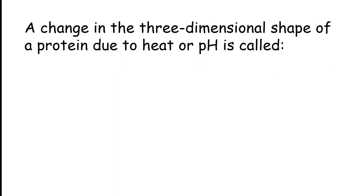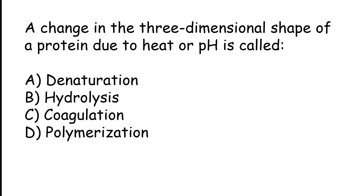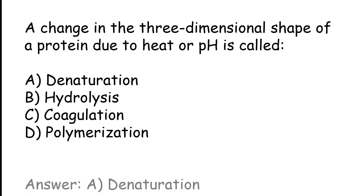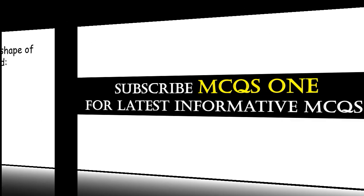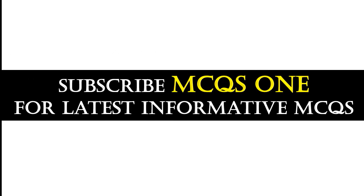A change in the three-dimensional shape of a protein due to heat or pH change is called: denaturation, hydrolysis, coagulation, polymerization. The correct answer is option A: denaturation. Thanks for watching — subscribe to MCQs One for the latest informative MCQs.